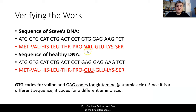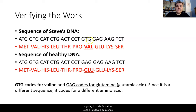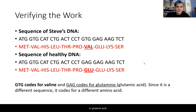If you've identified VAL and GLU as the two differences, you're correct. GTG codes for valine — that's Steve's sequence — and the GAG codon codes for glutamine or glutamic acid. Since it's a different DNA sequence, it codes for a different amino acid.